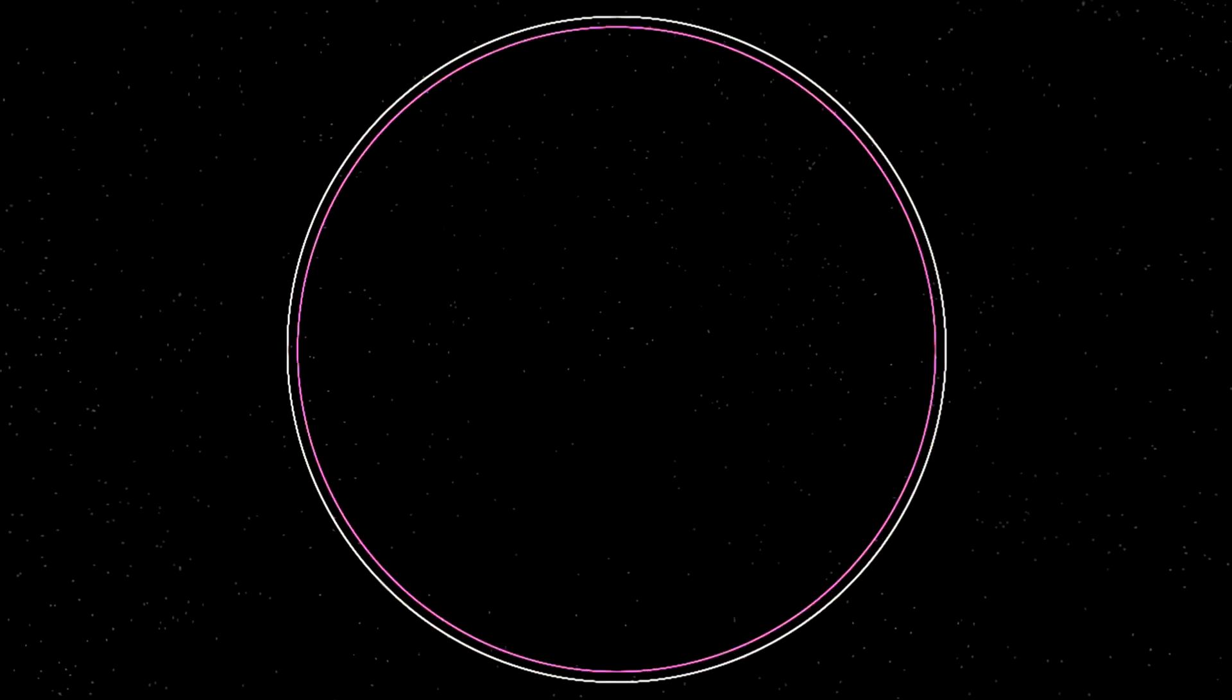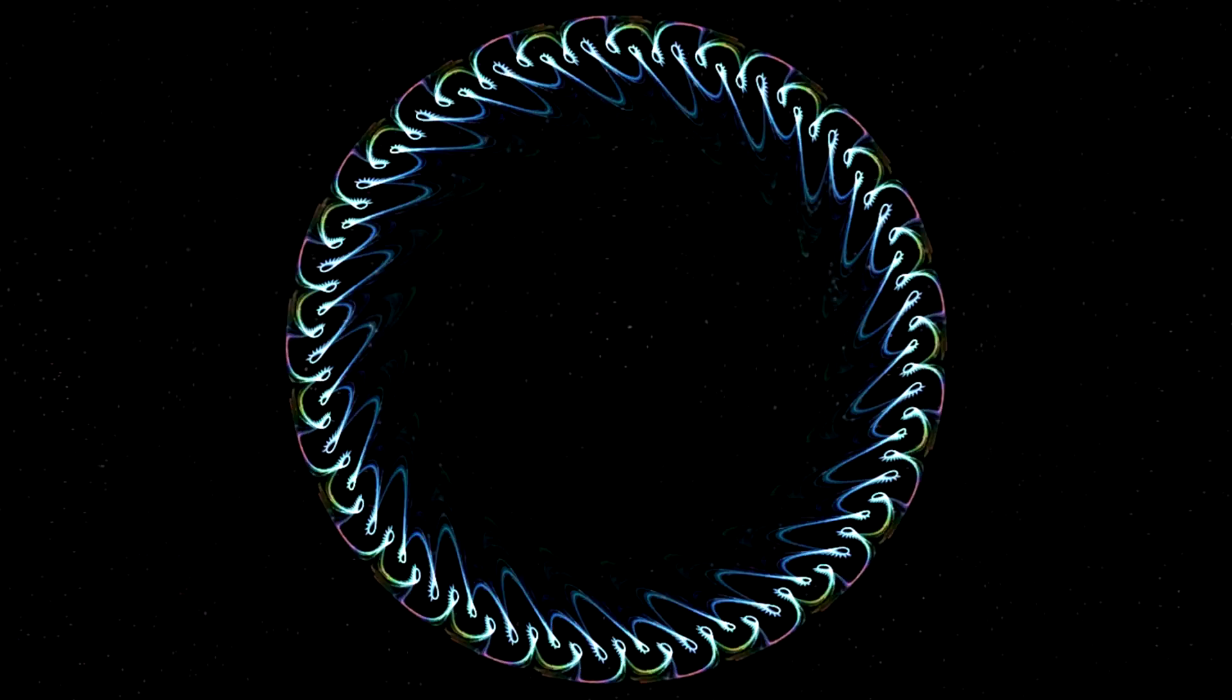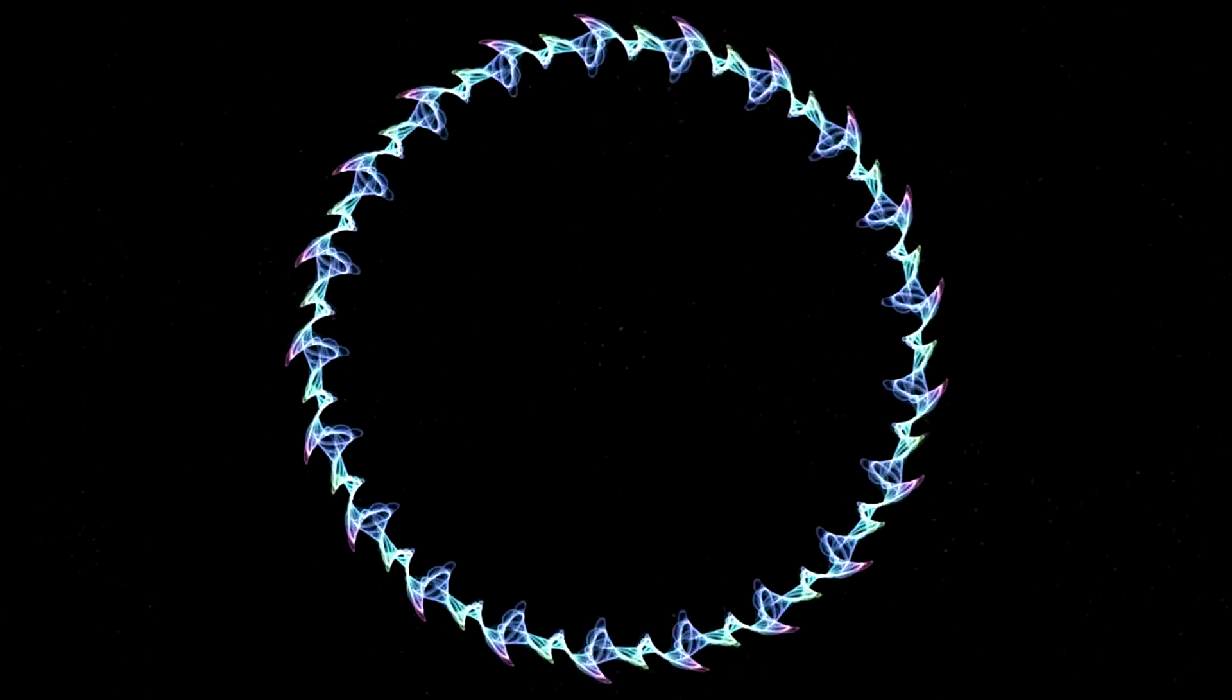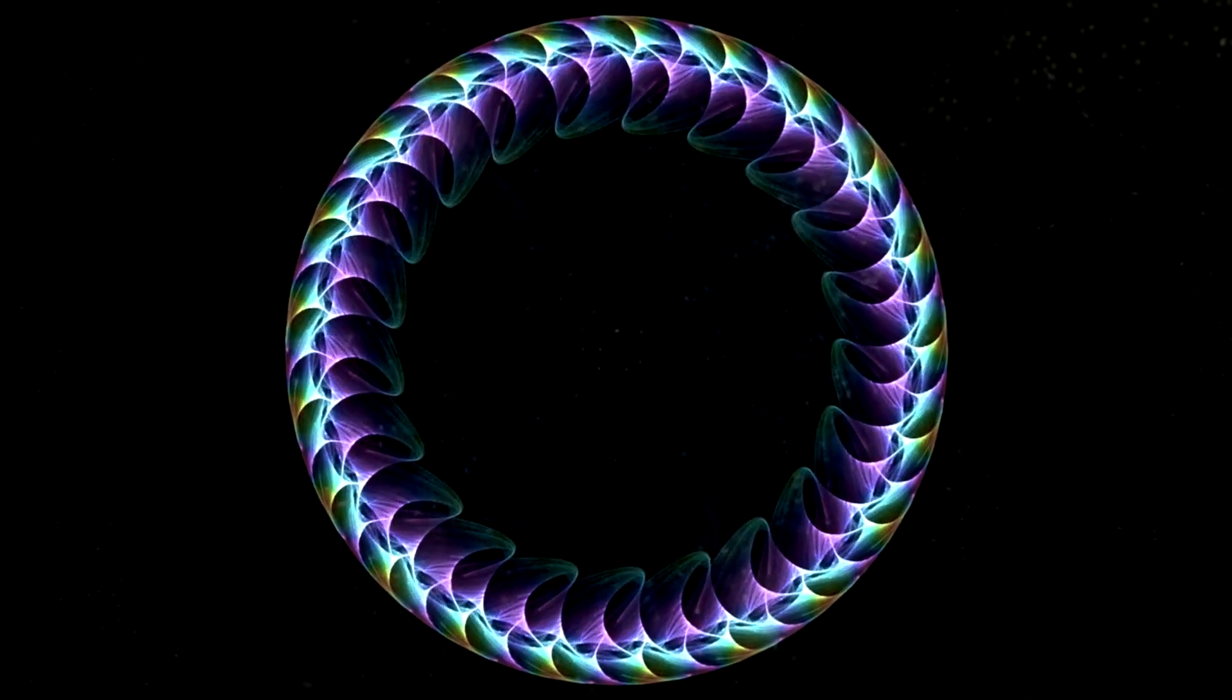And here's where it gets even more interesting. Quantum fluctuations in the early universe, tiny as they were, led to the uneven distribution of matter that later formed galaxies and clusters.